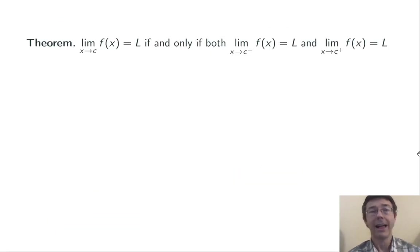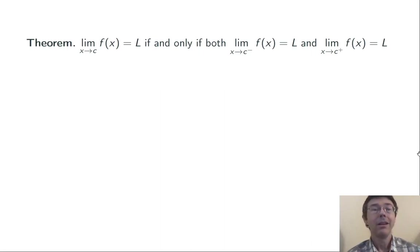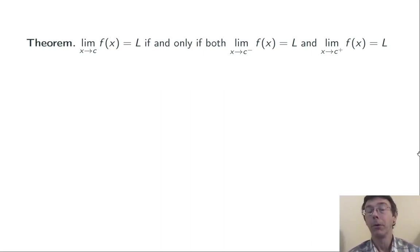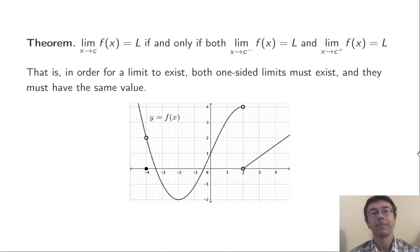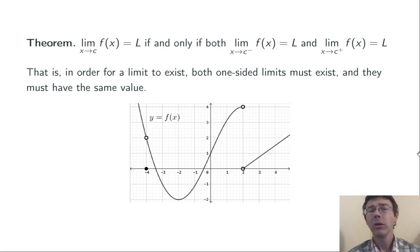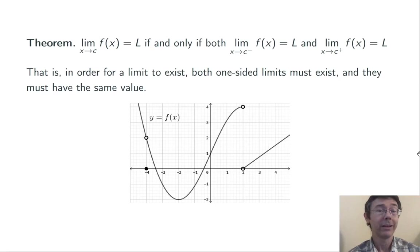This is a general fact — let's make it a theorem. The overall limit of f of x as x goes to c is equal to L if and only if the two one-sided limits both exist and are the same. So both the left and right-hand limits must be equal to that same value L. In order for an overall limit to exist, both one-sided limits have to exist and they have to have the same value.